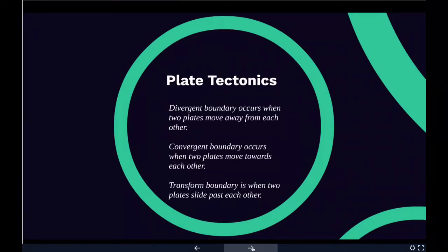When two plates are sliding past each other, we get a transform plate boundary. Natural or human-made structures that cross a transform boundary are offset, split into pieces, and carried in opposite directions. Rocks that line the boundary are pulverized as the plates grind along, creating a linear fault valley or undersea canyon. As the plates alternately jam and jump against each other, earthquakes rattle through a wide boundary zone. In contrast to convergent and divergent boundaries, no magma is formed — crust is cracked and broken at transform margins, but is not created or destroyed.